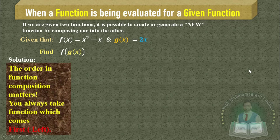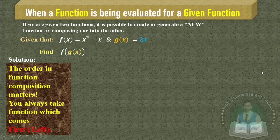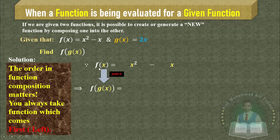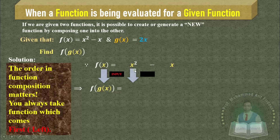The order in function composition matters a lot. You always take the function which comes first — first comes first policy. Here the first function is f(x), so write f(x) = x² - x. To find f(g(x)), just replace x by g(x) on the left-hand side as well as on the right-hand side of the given equation.